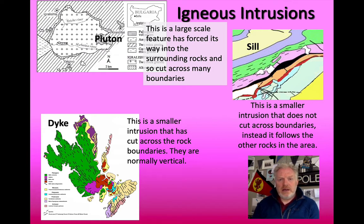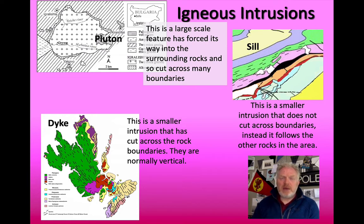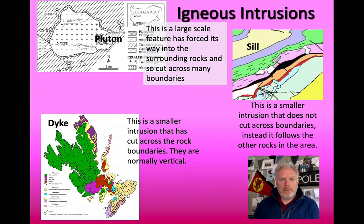A dyke is much smaller in scale. We describe its shape as being sheet-like — it's long and thin. Crucially, dykes are sheets of magma that have been injected into the country rock and cut across that country rock. They're often vertical, but they don't always have to be. The key point is that they cut across — they're discordant with the country rock.